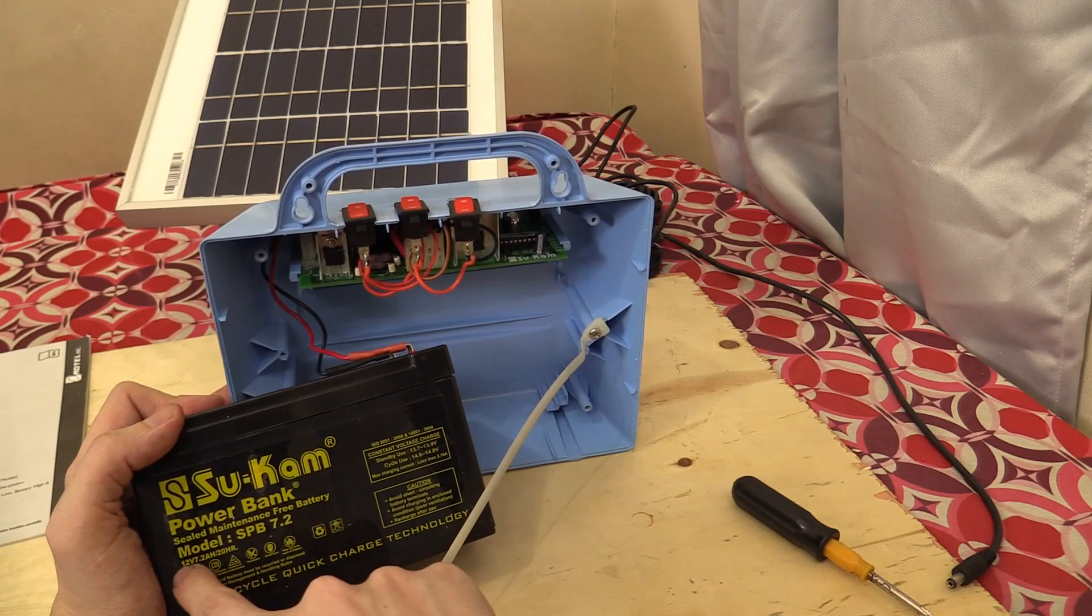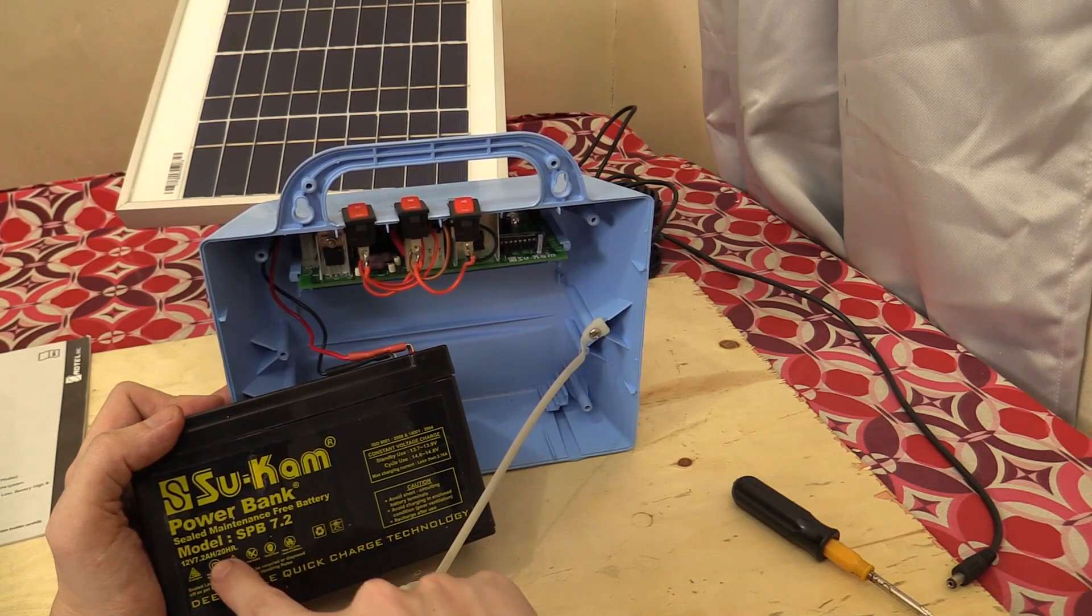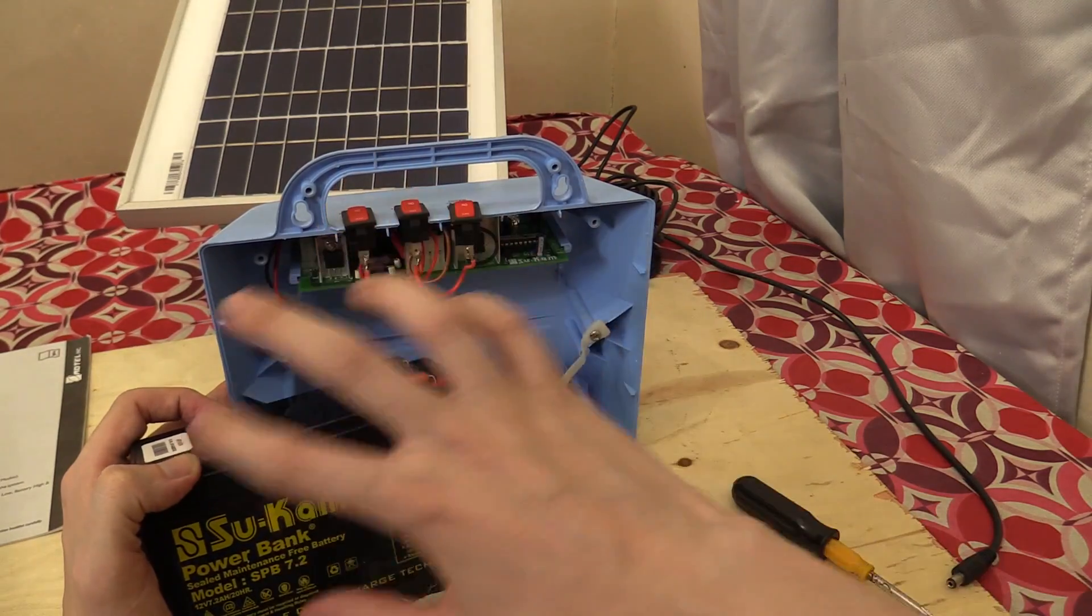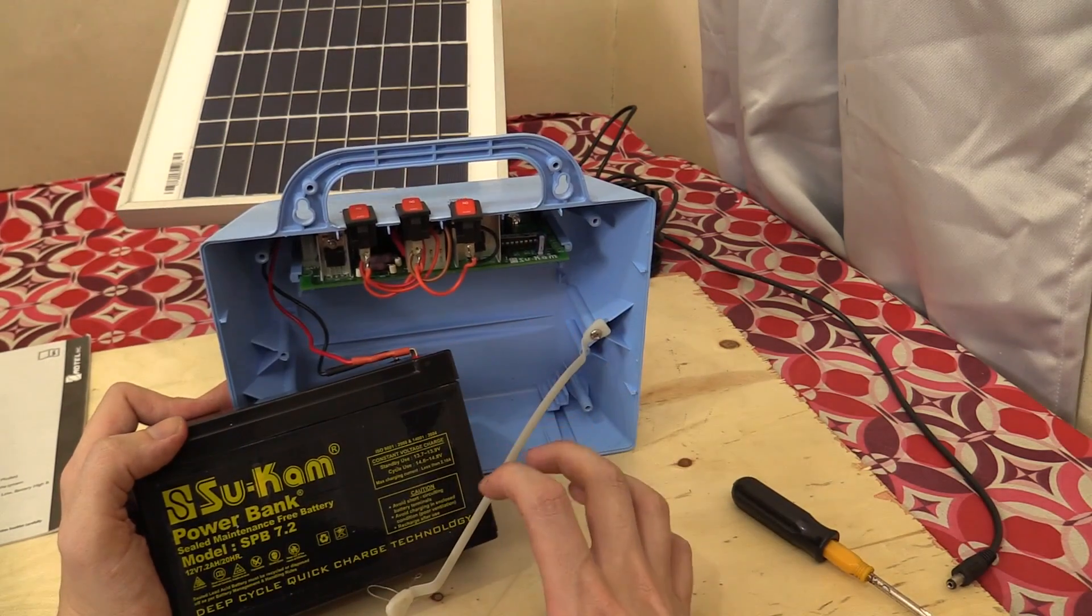You can see it's a standard 12-volt, 7.2 amp-hour battery. And it is a sealed maintenance-free battery. That means that there's no ports there to add water or anything like that. It's completely self-contained.